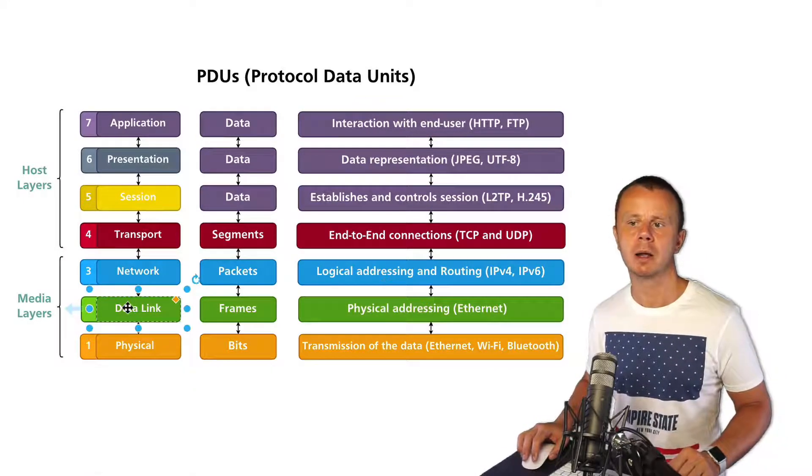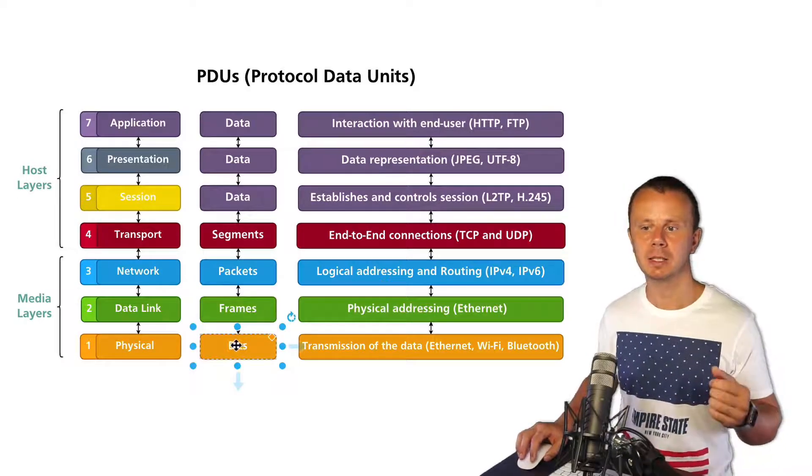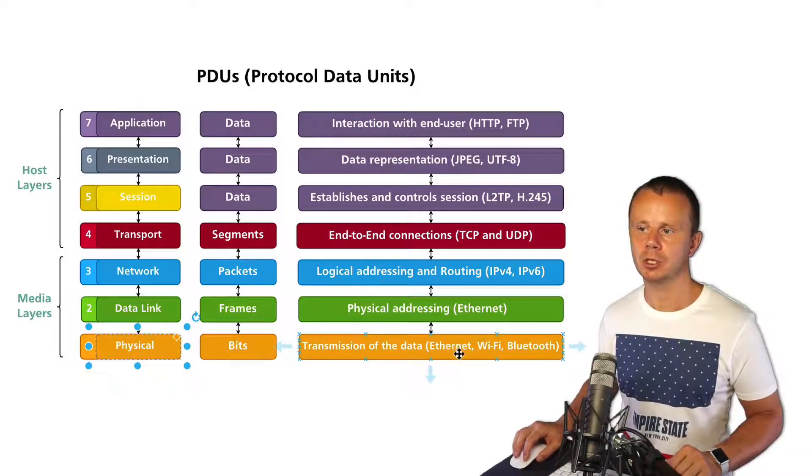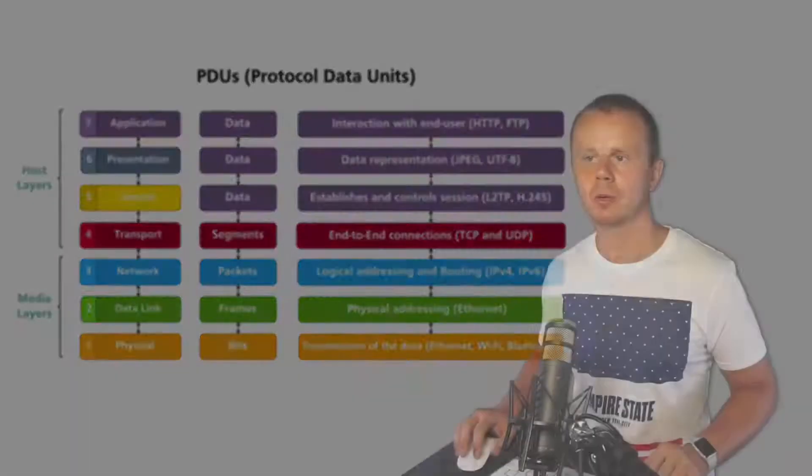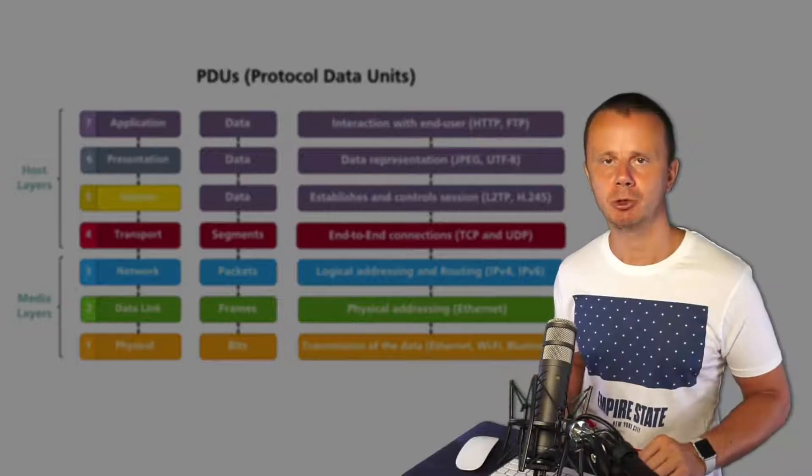An example of the protocol that is used on the data link layer is Ethernet, and PDUs for data link layer are frames. Finally, bits are sent over the physical media and we could name here such protocols and technologies as Ethernet, Wi-Fi, and Bluetooth.